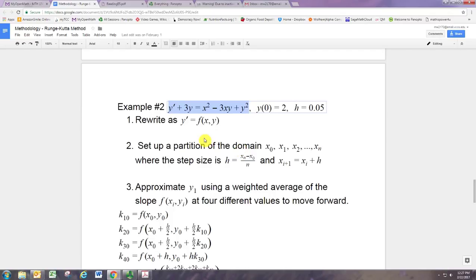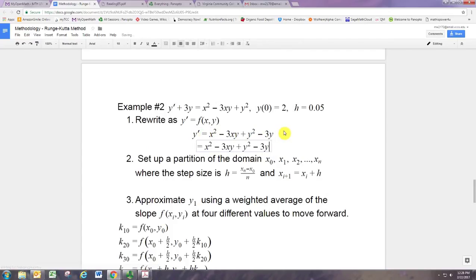We're going to use the same example as we did with the improved Euler methodology. So we've already seen how to solve for y prime here. We just subtract 3y from both sides and get this version of the differential equation. So when we refer to f later on in the formulas, that's what we're using. We're saying that f is this.